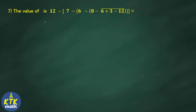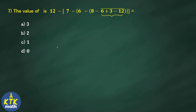Question number 7: a lengthy expression with a bar notation, meaning solve what is under the bar first. The options are 3, 2, 1, 0. Solving step by step: 6 plus 3 equals 9; 9 minus 12 equals minus 3. Then 8 minus of minus 3 gives 8 plus 3 equals 11.